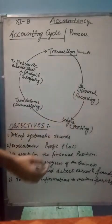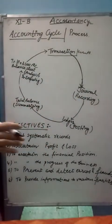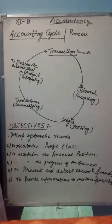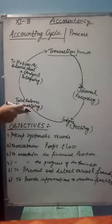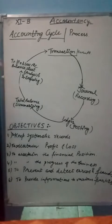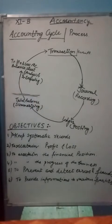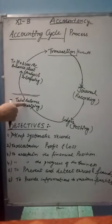Then we are posting — that is classifying. All the journal entries are classified. We call it the ledger book. The process of posting the entries is called posting. Then the next step is summarizing — summarizing the balances.